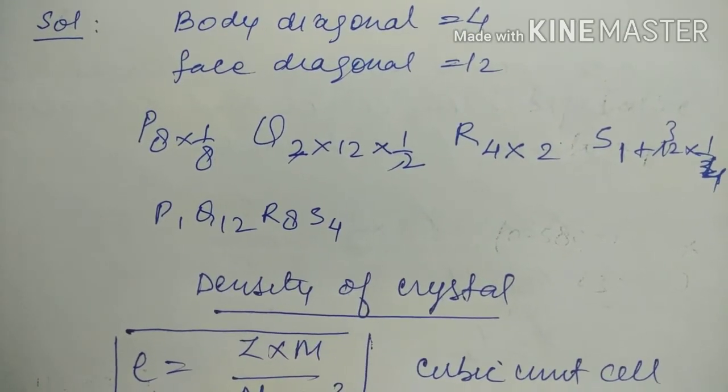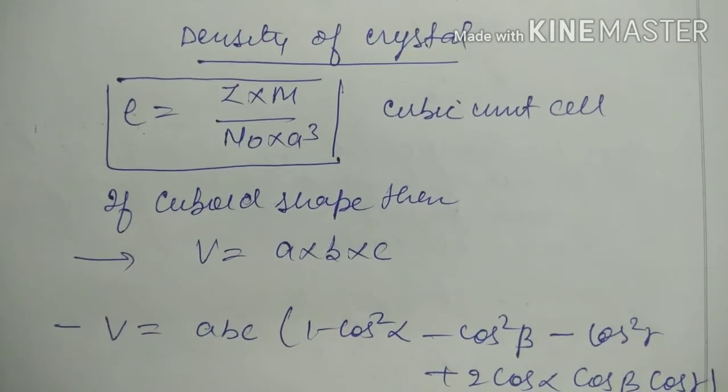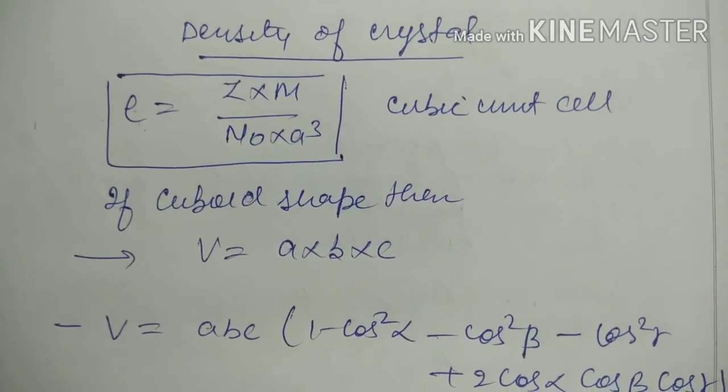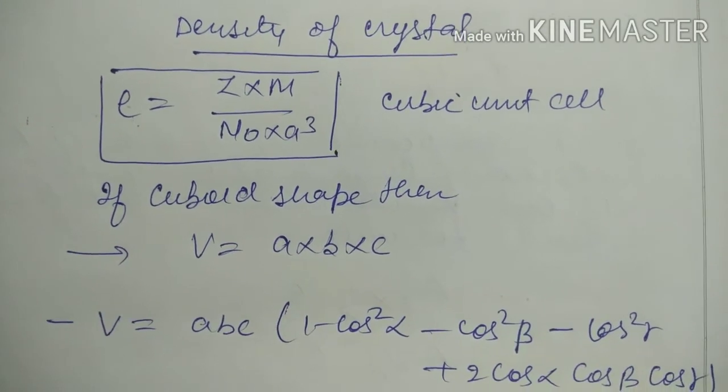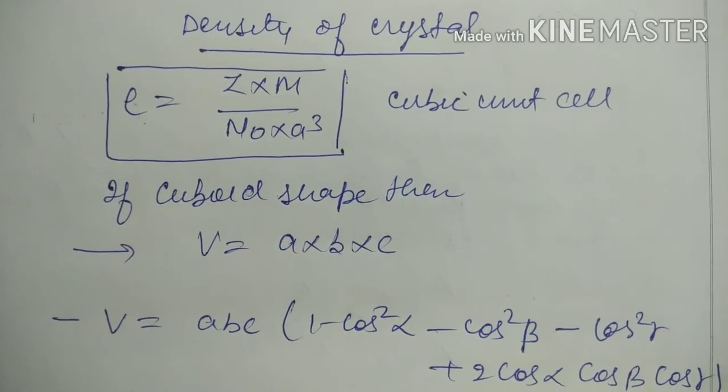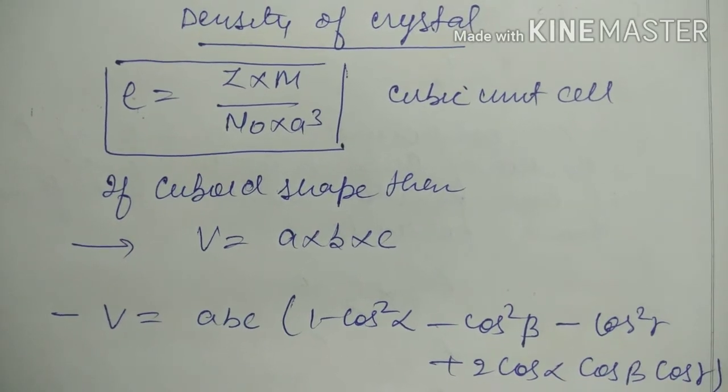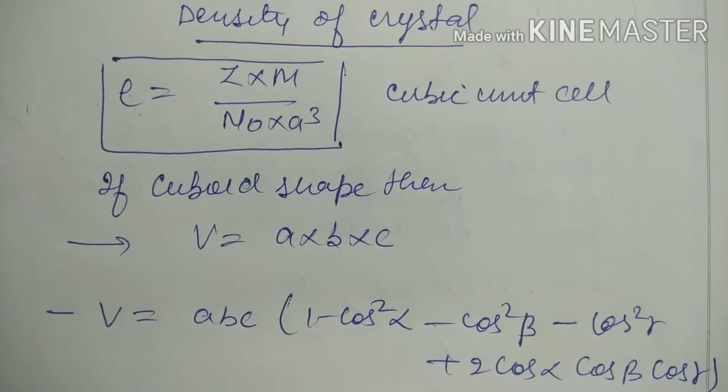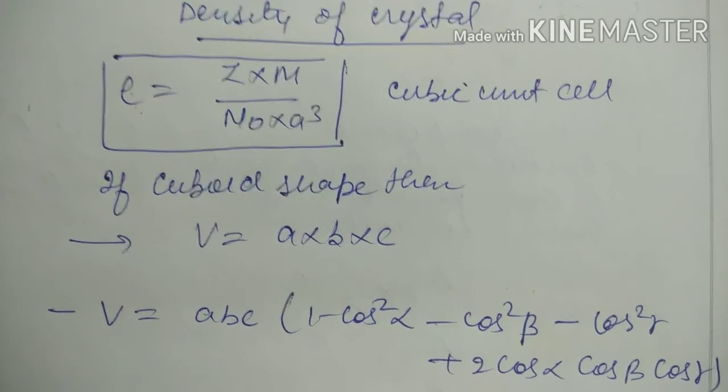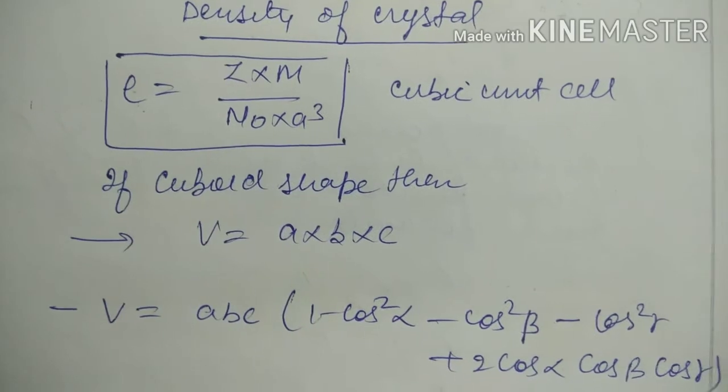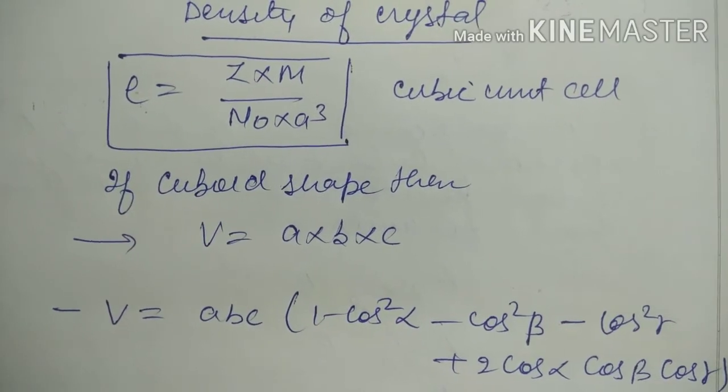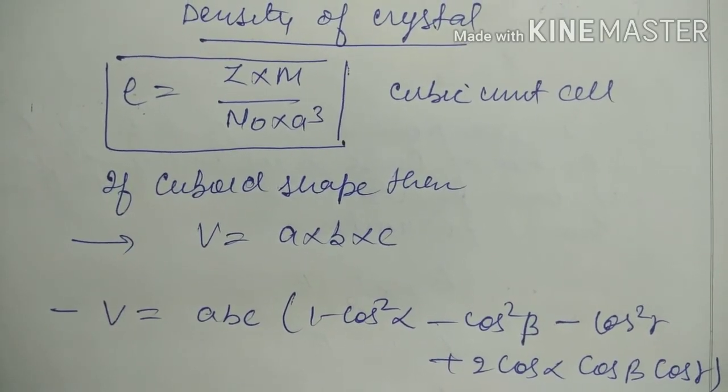Now after that, we're coming to the next heading: density of crystal. We know that the crystal is actually cubic, so density is mass upon volume. But here for the unit cell, rank must be there, so Z times M. One mole has Avogadro's number of atoms, so N_A times a cubed. For a cubic unit cell, if it's a cube, in place of volume a cubed, we use ABC.